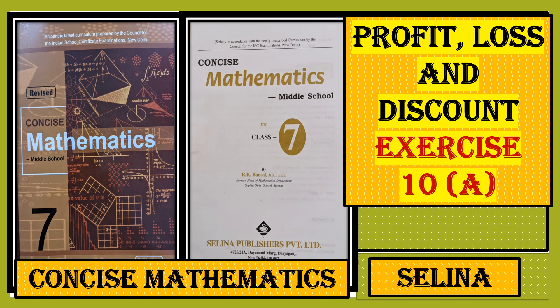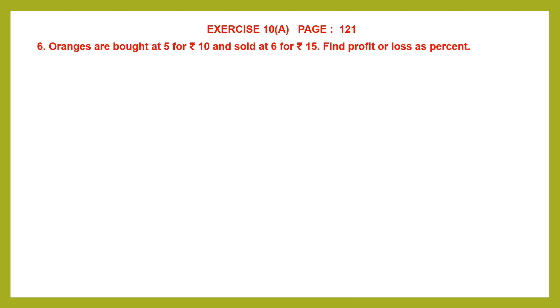Hello students, let's do profit, loss and discount exercise 10A, page number 121, question 6. Oranges are bought at 5 for 10 rupees and sold at 6 for 15 rupees. Find profit or loss as percent.